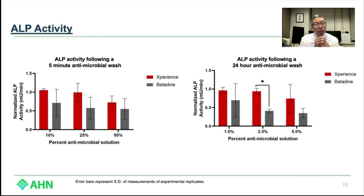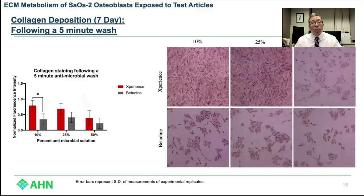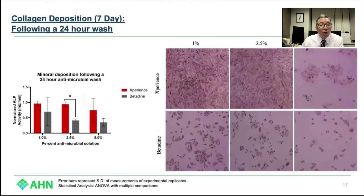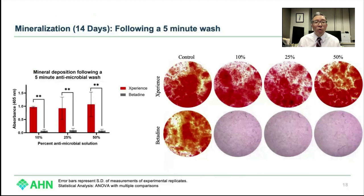When we move on to the ALP activity, we were quite happy to see those results. The ECM data for the five-minute wash tells a very similar story. When we look at different concentrations in a five-minute wash, the amount of ECM being laid down — measured by collagen deposition after seven days — shows a dramatic difference even at low concentrations: 10% and 25%, between Xperience and betadine, and those were statistically significantly different. The 24-hour wash at 1% and 2% solutions also showed dramatic differences in the amount of ECM being laid down as a precursor before the final mineralization phase.